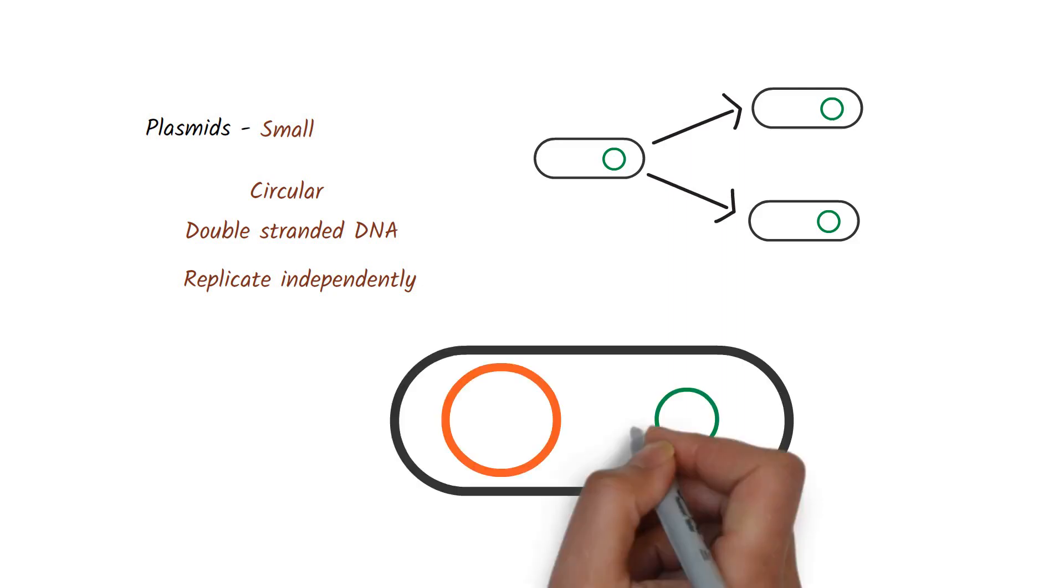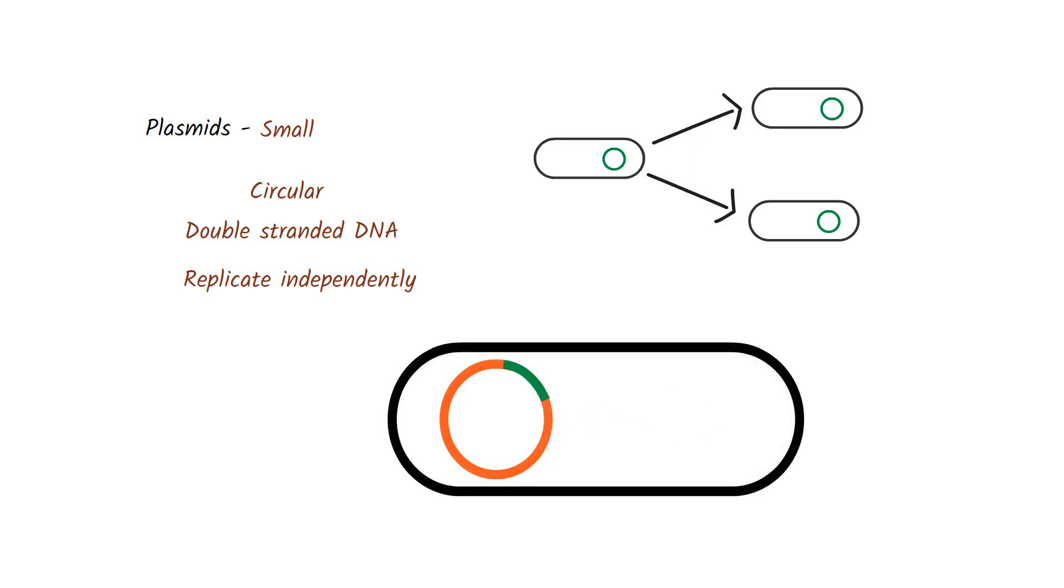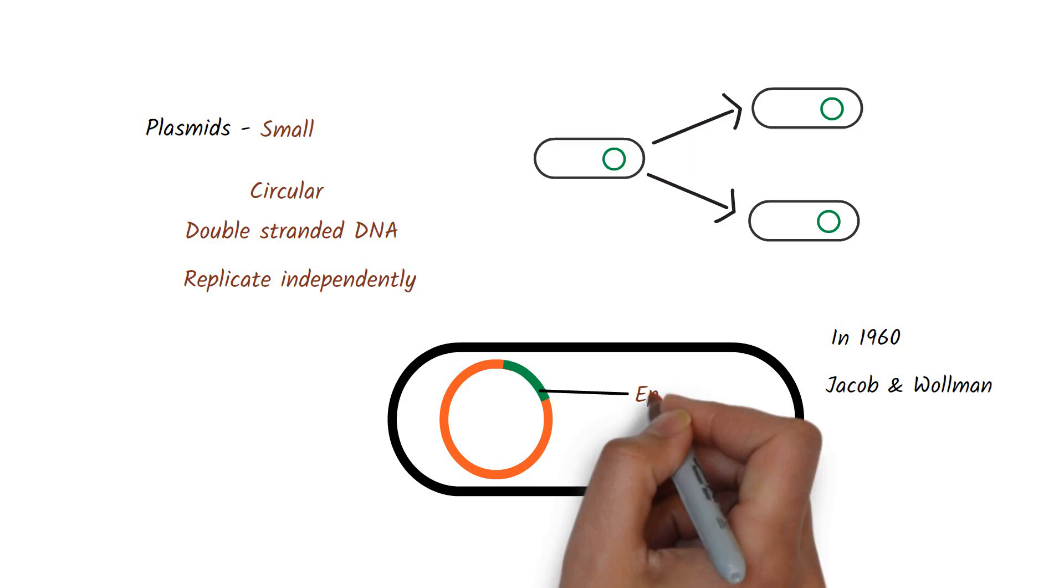Plasmids are small and circular-shaped double-stranded DNA. They can replicate independently during cell division and are inherited by both daughter cells. In some cases, plasmids can integrate with bacterial chromosome and replicate along with the chromosome. In 1960, Jacob and Wollman termed the extra-genetic material that is integrated with the bacterial chromosome as episome.